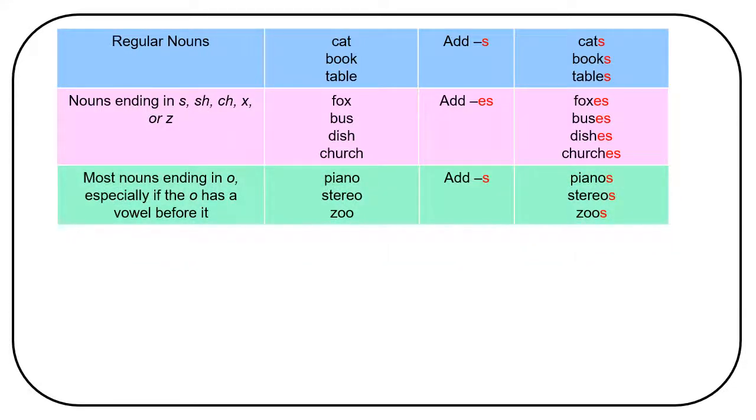Most nouns ending in o, especially if the o has a vowel before it, you add s. Piano, stereo, zoo, become pianos, stereos, zoos.